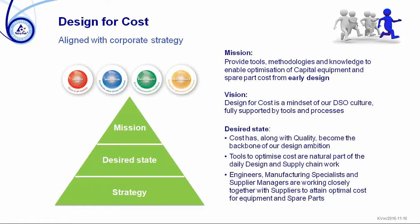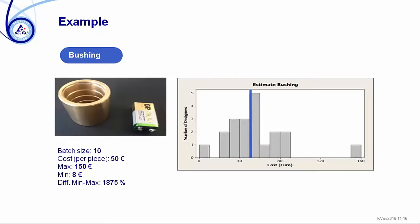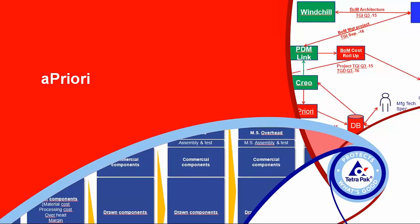Do we actually know what our parts should cost? Do we have the competence to evaluate the should cost? We did a test — we sent out several parts to several designers. This is just one example: designers were given the task to estimate the cost on a particular part, quite a simple bushing. The answers varied between 8 euros and 150 euros — quite a big difference. The competence of understanding the manufacturing process and estimating cost related to it is something we have lost because we outsourced our production of equipment more than 20 years ago, and the people with actual production experience have retired.